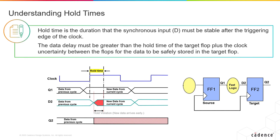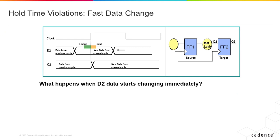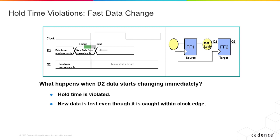If we look at this illustration, the D2 input is switching when the old data is being captured into the second flop. Therefore, the data is not captured safely into the new flop. What happens when the data changes immediately? You'll have a hold time violation. And even though it is caught within the edge, the data is still lost because the flop didn't even fully absorb the previous data into the flop before the data changed a second time. For the data to be safely stored into the flop, the new data must not arrive so fast that the flop doesn't absorb the data from the previous cycle.